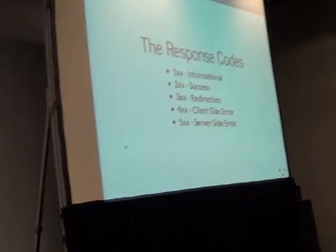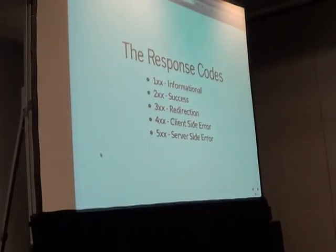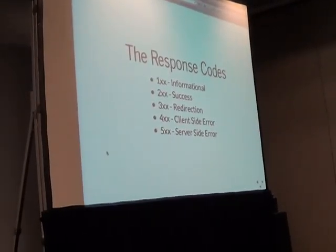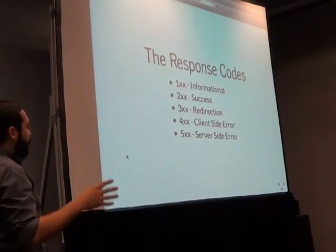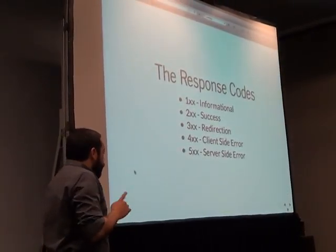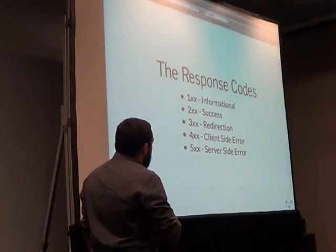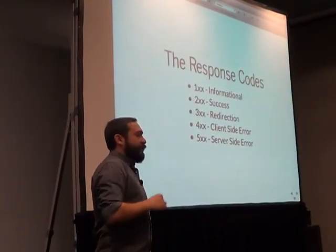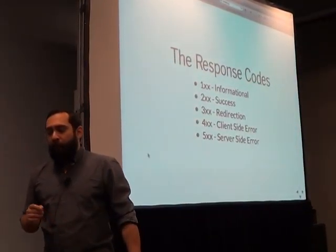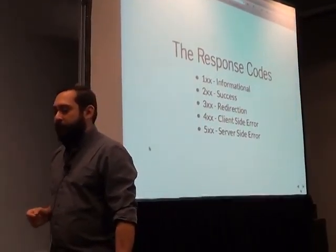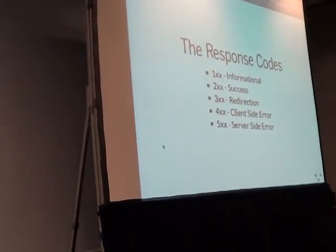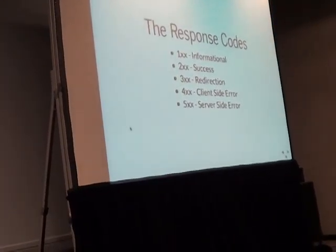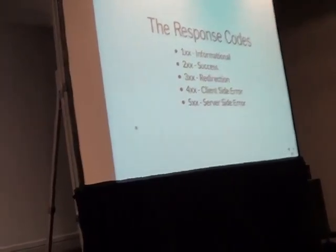There are warranty status families I'll highlight here. Anything in the 200 family means all good — success. Anything in the 300 family means go somewhere else; we're sending it to another URL or site. A 400 family means client-side error — you asked for something that wasn't there. A 500 means the server couldn't fulfill your request. Knowing the difference between a 400 and a 500 error is how we start troubleshooting a problem.